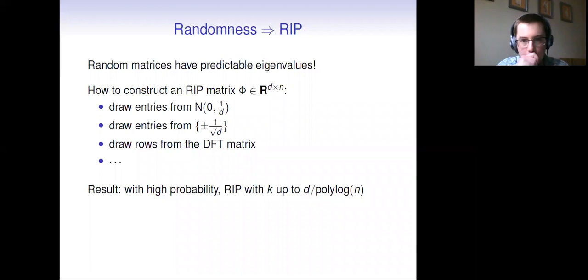RIP matrices, the ones that compressed sensing works for, they are not so hard to build if you're happy to work with randomness. Random matrices have predictable eigenvalues. You could grab Gaussian normal entries, you could draw plus minus ones appropriately normalized, you can draw rows out of discrete Fourier transfer matrix. The result at the end of the day is going to be that with high probability you've built an RIP matrix with this parameter K all the way up to basically D with K basically up to D, which is the most that you could ever hope for.